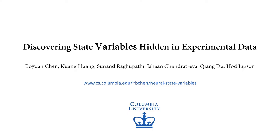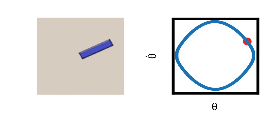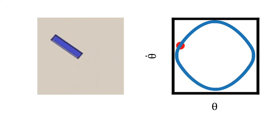We are researchers from Columbia University. Today, we are going to tell you about our research on discovering state variables hidden in experimental data. Let's first look at an example. Given a single pendulum video shown here, what would you do in order to model this system and hence predict its future behaviors?